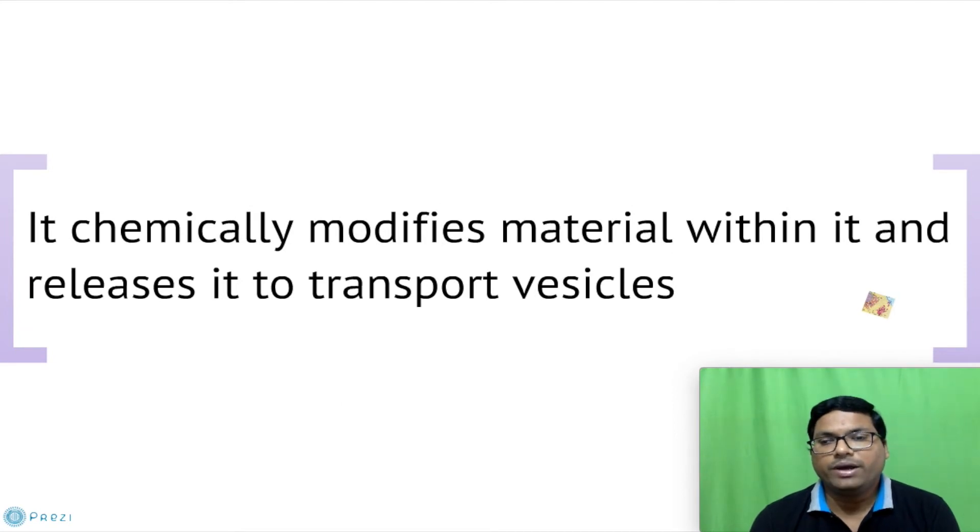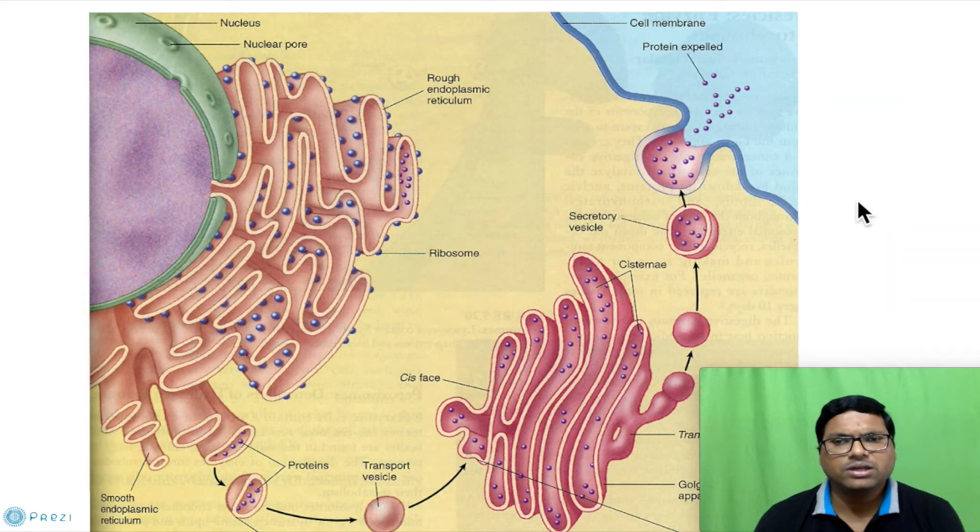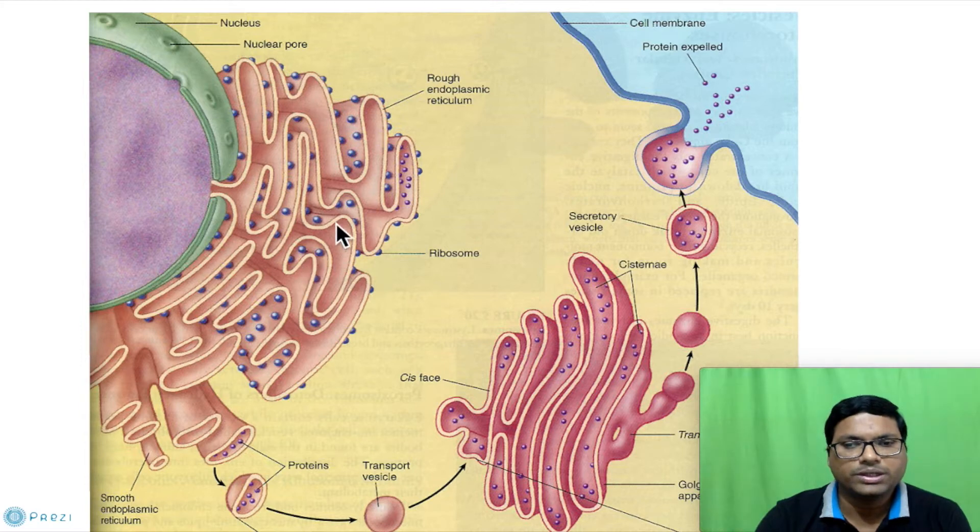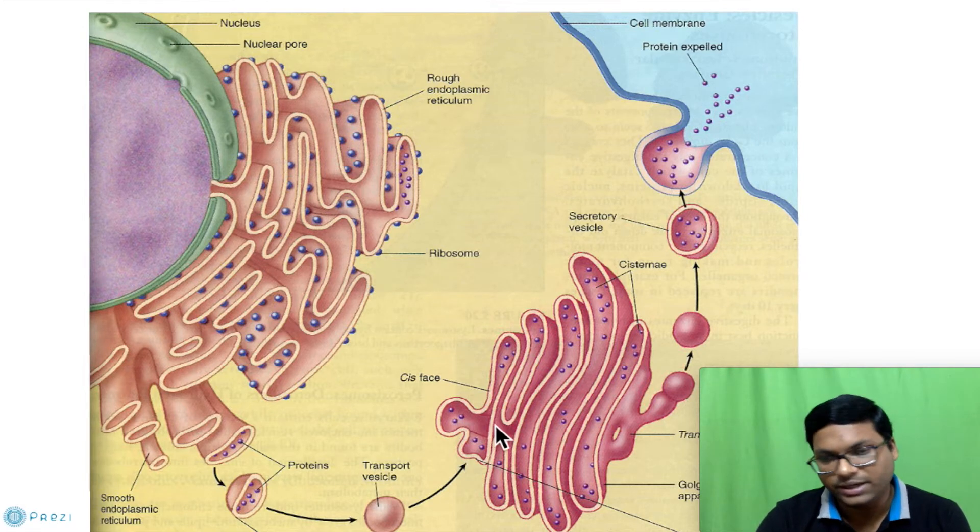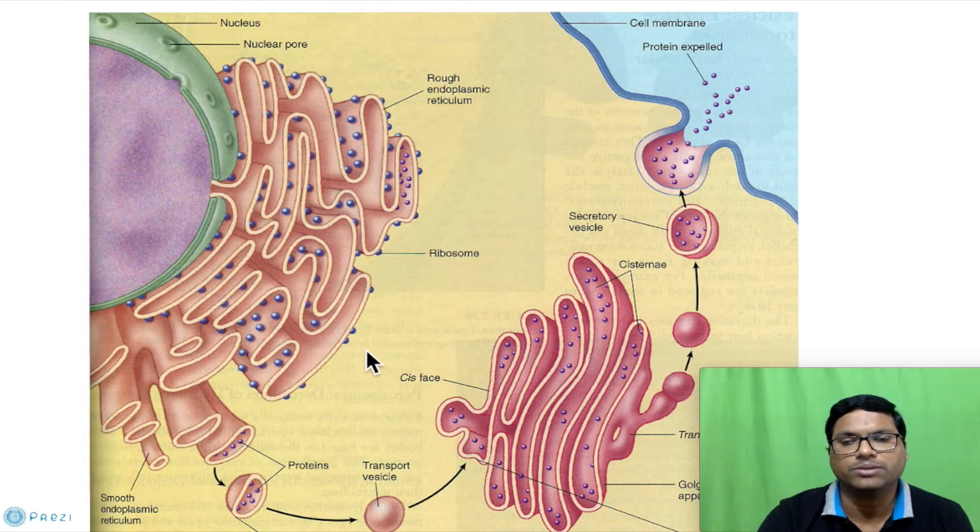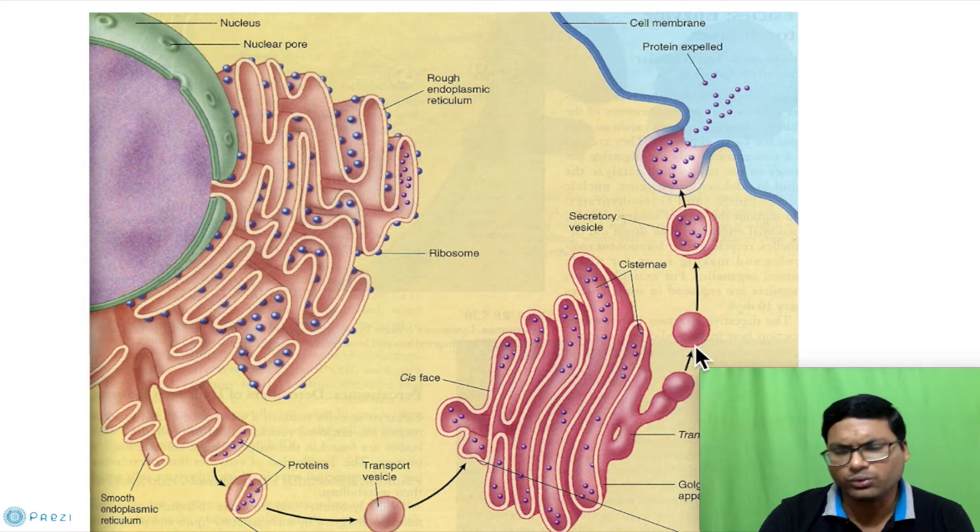It chemically modifies material within it and releases it to transport vesicles. As you can see in this diagram, material received from endoplasmic reticulum travels through vesicles and is transported to Golgi towards its cis face, which is the site directing towards the endoplasmic reticulum. It receives the material, processes it, and then releases it through vesicles towards distinct different sites of cells.